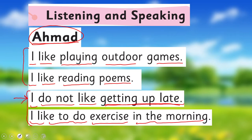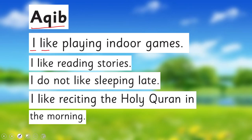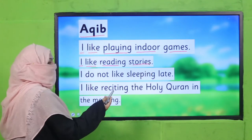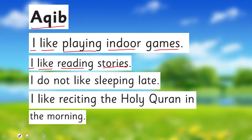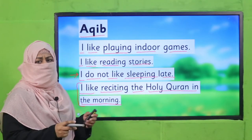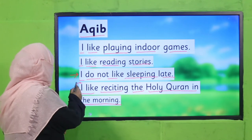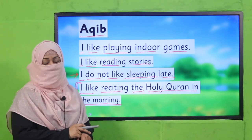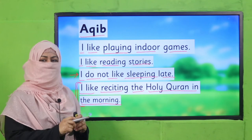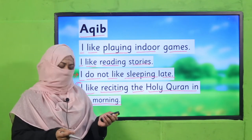There is another boy named Aqib. He says: 'I like playing indoor games' — this is your own choice, one likes to play outside, the other inside. 'I like reading stories' — one likes poems, the other likes stories, also your own choice. 'I do not like sleeping late' — good job, you should go to bed early. 'I like reciting the Holy Quran in the morning' — really good! You see how nicely Aqib expresses himself. Do you recite Quran in the morning? We should try — even a little — and morning is the best time for that.